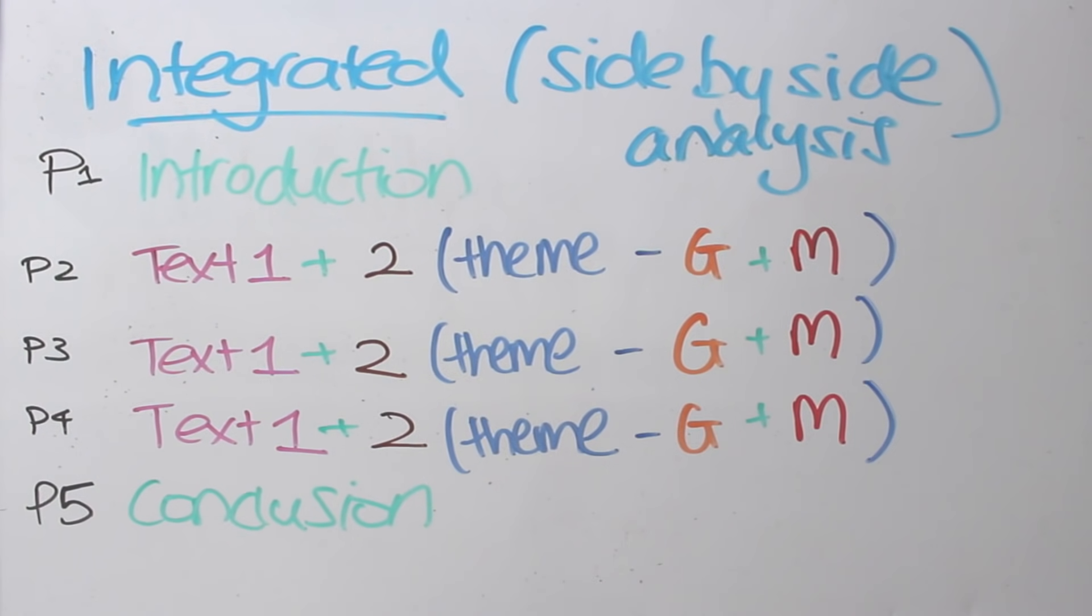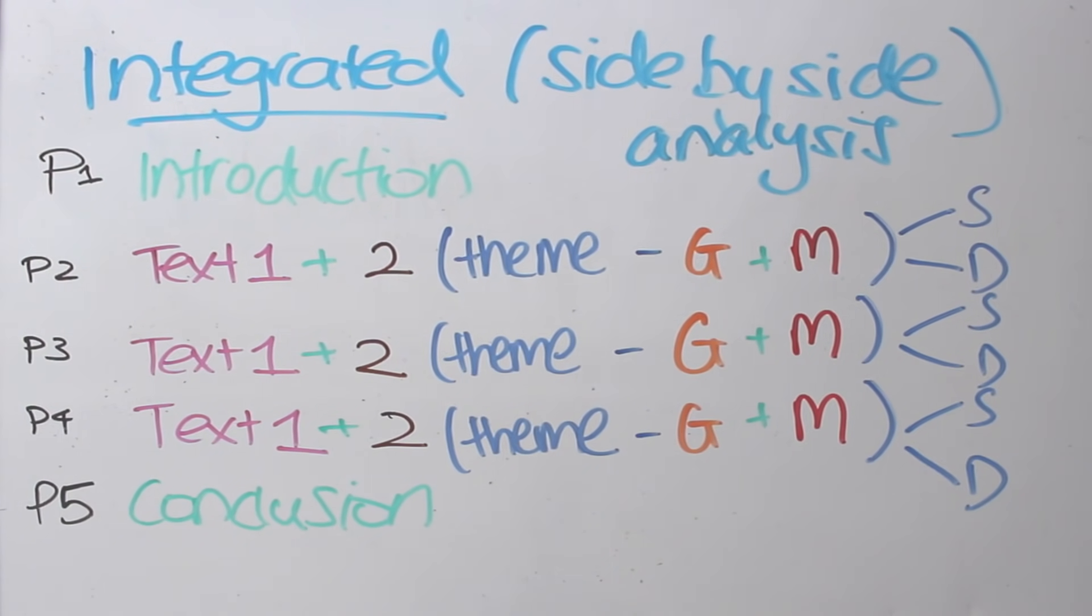So G stands for Great Gatsby, M for Macbeth, S for similarity, and D for differences. As you can see, it is definitely a more complex way of going about things. However, this essay structure often offers a lot more in-depth analysis of the two texts.